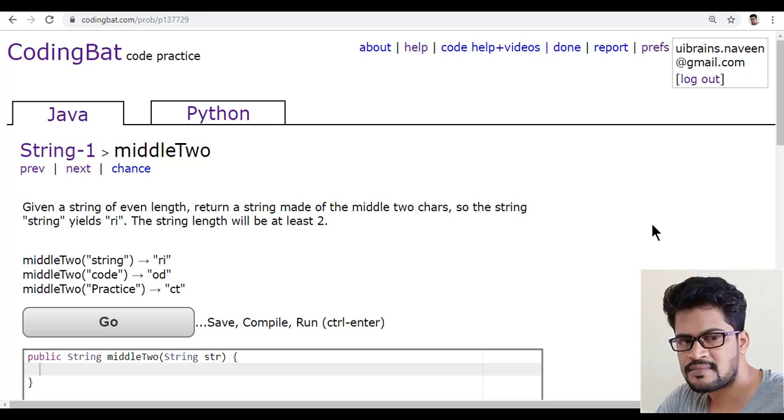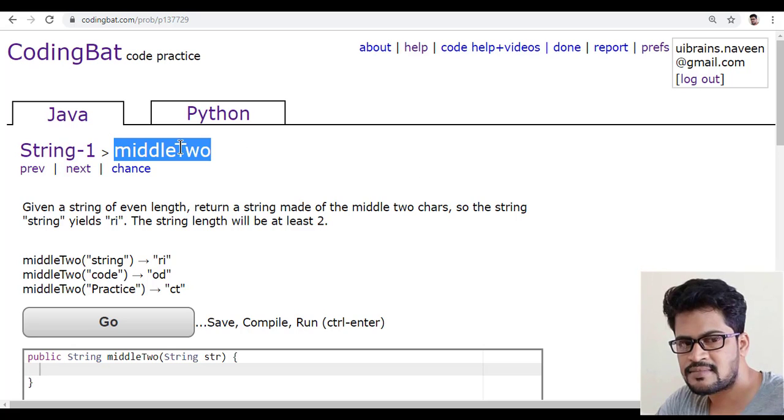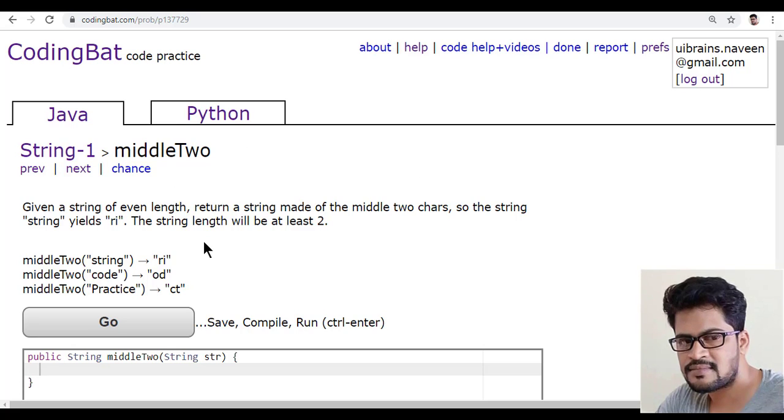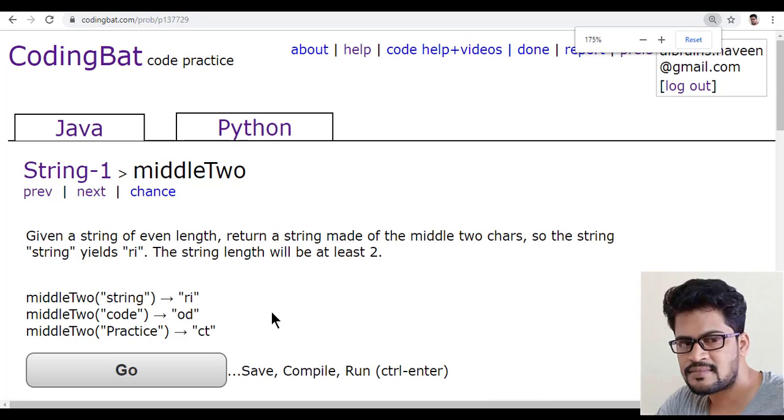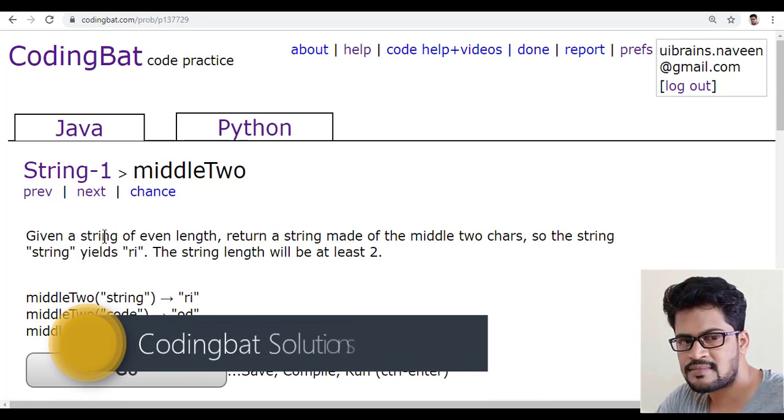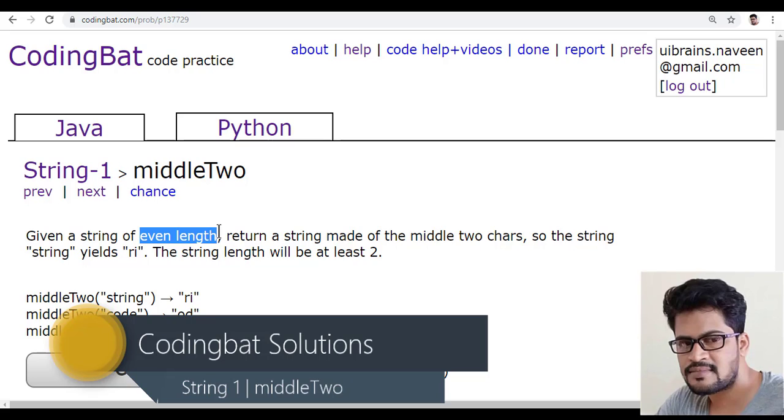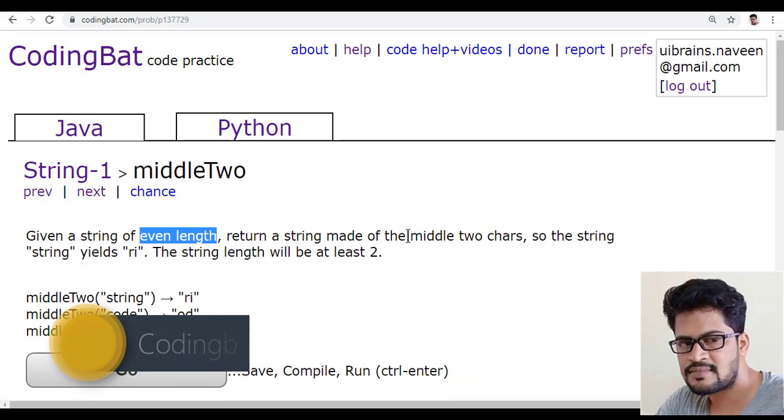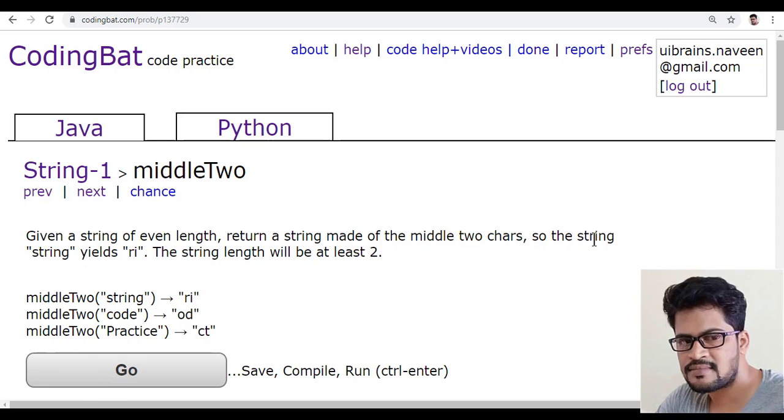Hello everyone, welcome to UiBrainz and this is Naveen. In this video, we're going to see a new question called middleTwo. Let me zoom this. Given a string of even length, return a string made up of the middle two characters. The string length will be at least two characters.